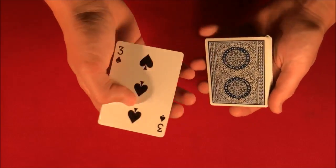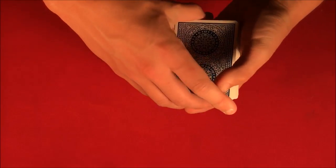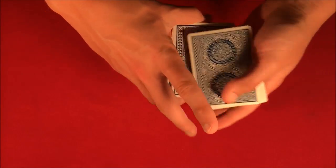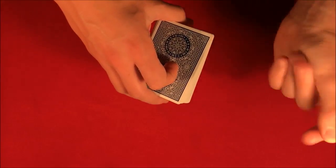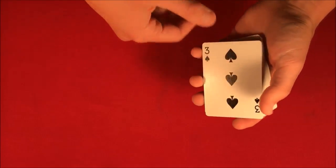So let's say a spectator picks a card from the middle. It doesn't matter which one. In this case, a three of spades. You take the three of spades and tell the spectator you're going to lose this in the middle of the pack, but then you snap your fingers and it comes back up to the top.